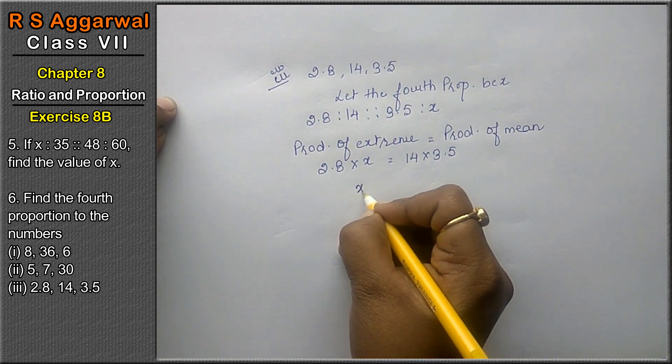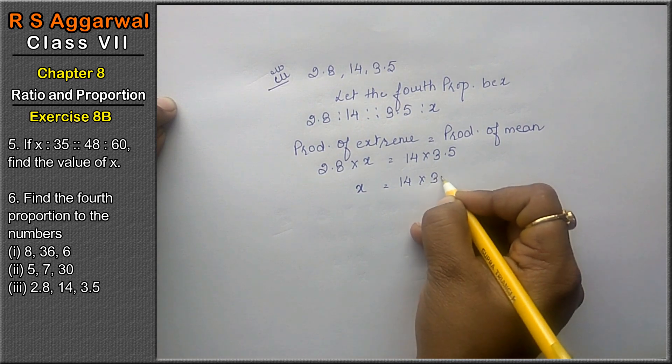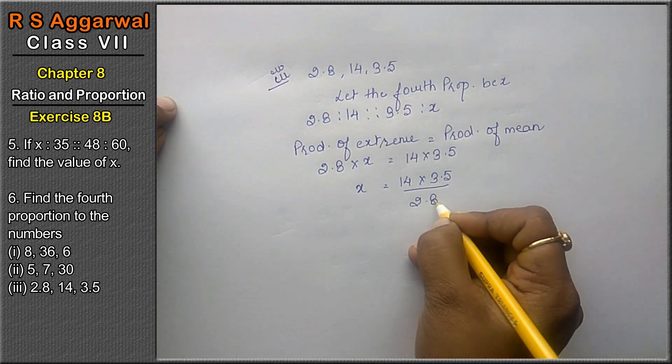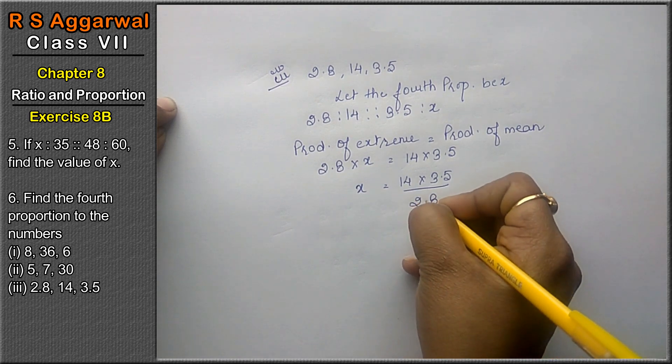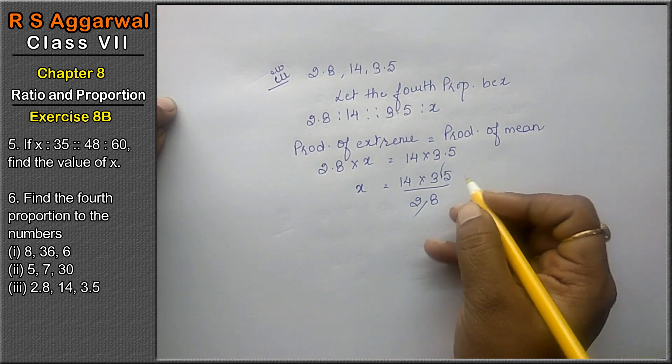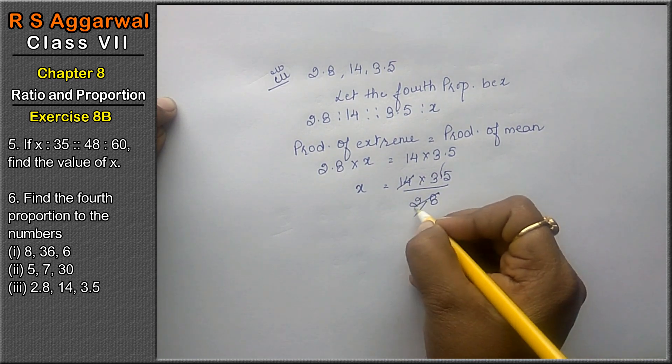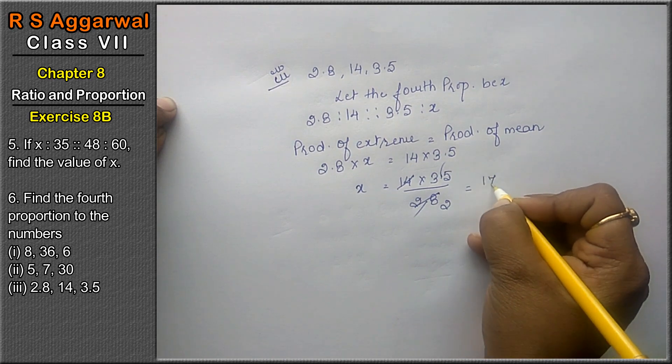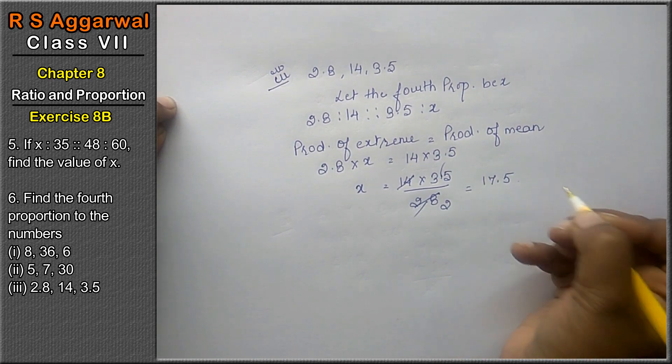So x as it is, 14 into 3.5 upon 2.8. Friends, here there's one decimal point after one, here also one decimal point after one. Point point cancel. Now 14 once is 14. 14, 2 is 28. 35 upon 2. That means 17.5 is the answer.